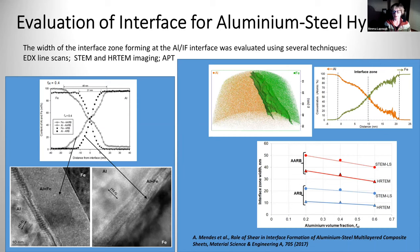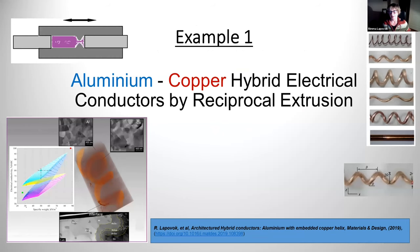Now I'll go to some examples of our work. In many cases our architecture was inspired by nature. One example, where we considered different architectures inspired by nature, is aluminum-copper hybrids to improve electrical conductivity and strength by using reciprocal extrusion, which is one of the severe plastic deformation processes.